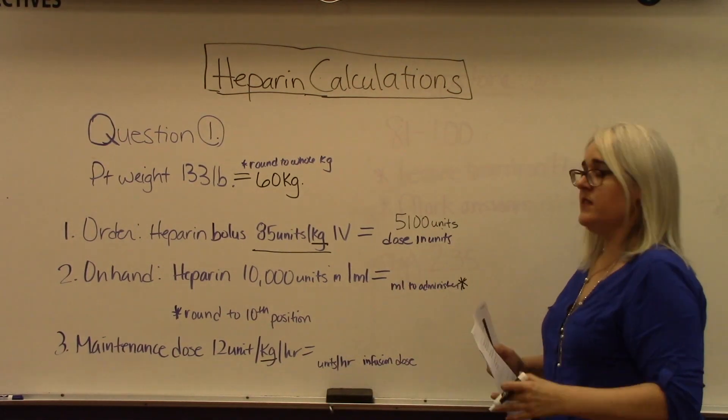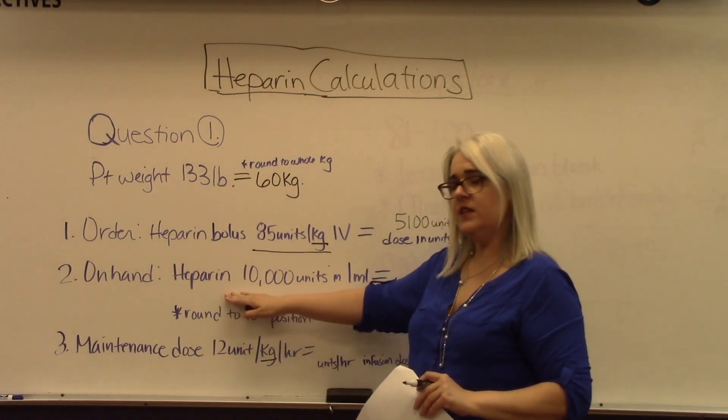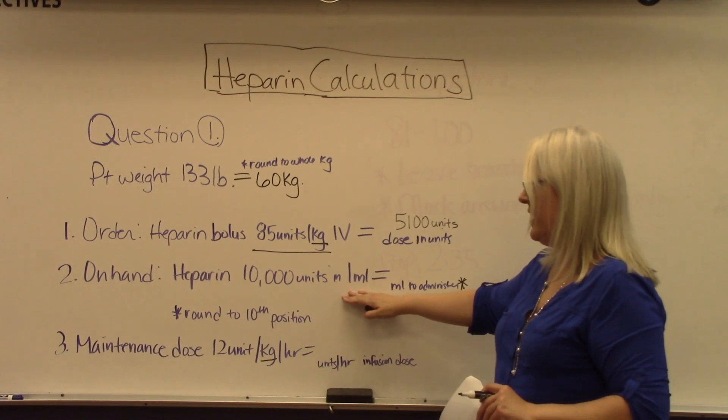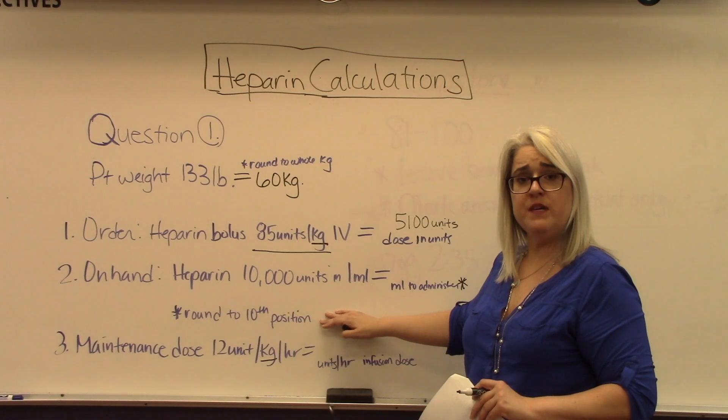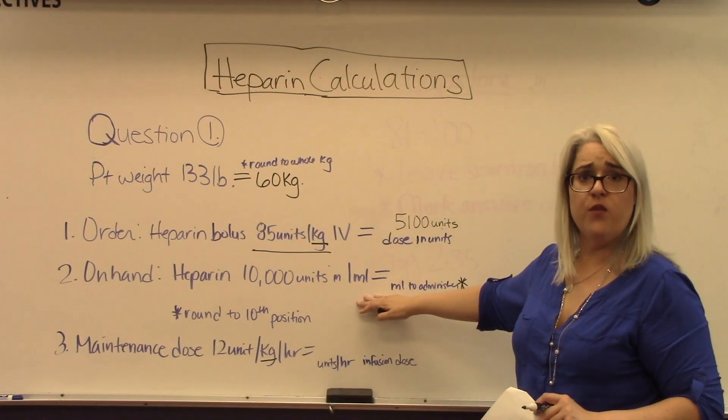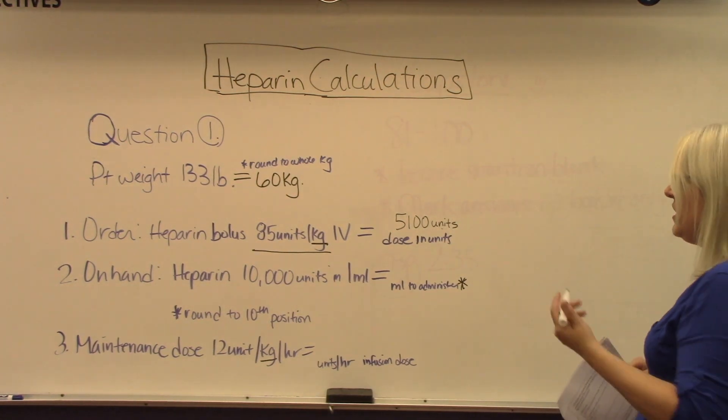We move on to the next step. What do we have available? Our on hand is heparin 10,000 units in one milliliter, and the instructions say to round your milliliters to be administered to the tenths position.